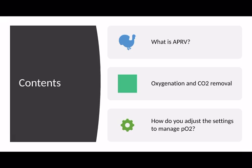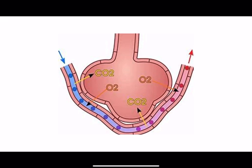We'll briefly give an overview of what APRV is, but it's worth going to the first video in this series to get a more in-depth knowledge of it. We'll then talk a little bit about oxygenation and CO2 removal, and importantly, what things you can adjust on APRV to improve oxygenation if a patient is hypoxic. As with all videos in this series, it's worth going back to see my videos on the basics of ventilation, because you will get a much better understanding of what we are talking about.